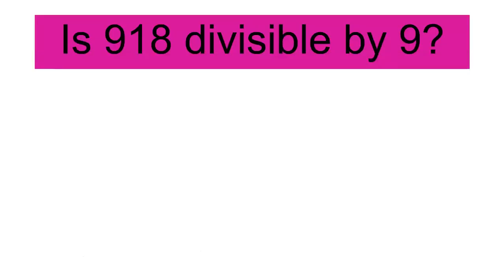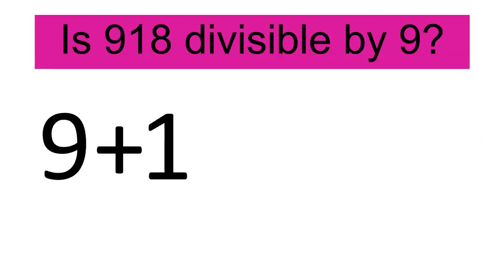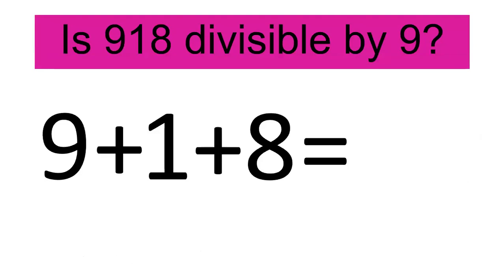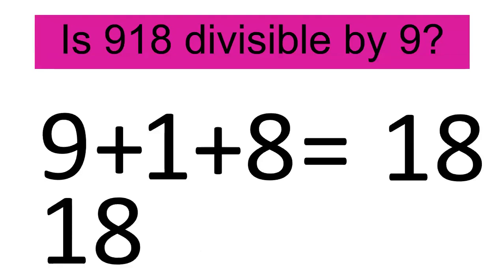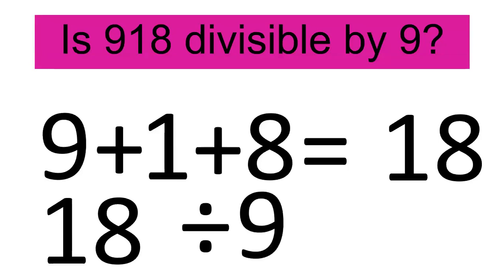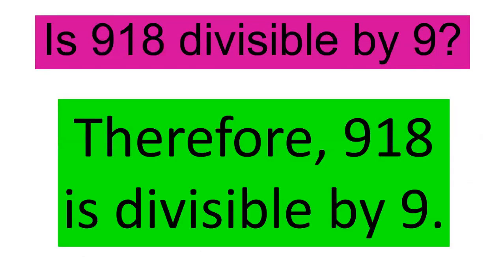Another example: Is 918 divisible by 9? Same process — add the digits: 9 plus 1 plus 8 equals 18. Then, 18 divided by 9 equals 2. Therefore, 918 is divisible by 9.